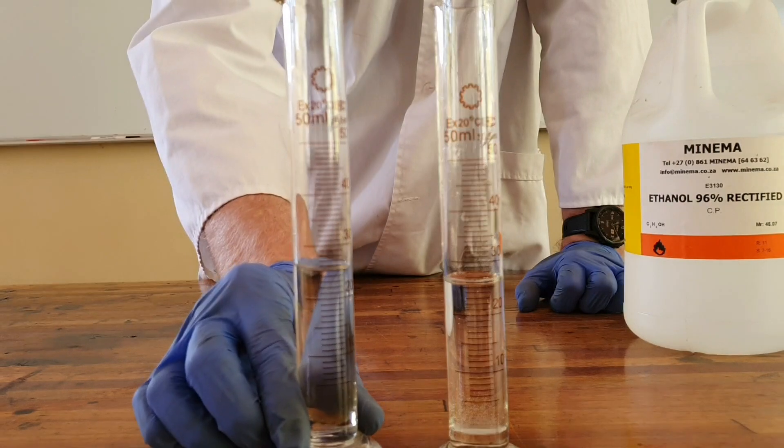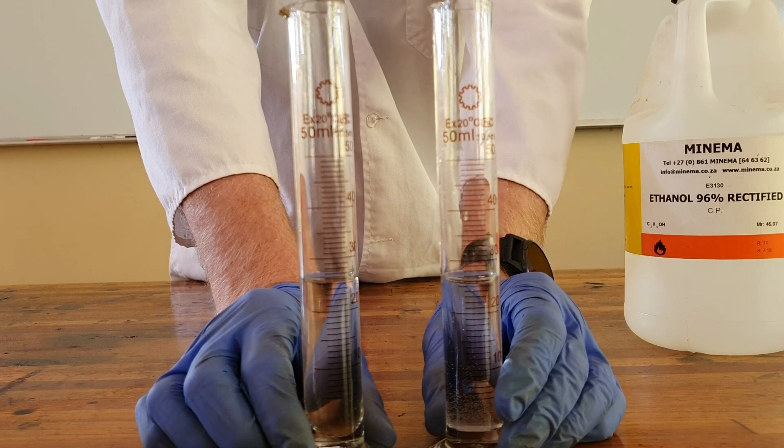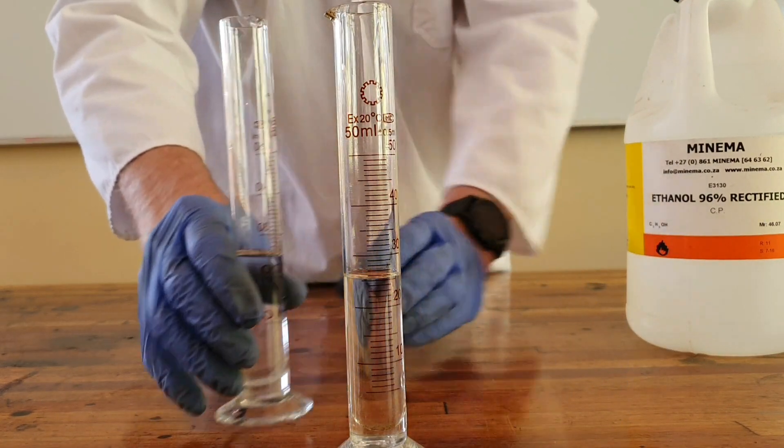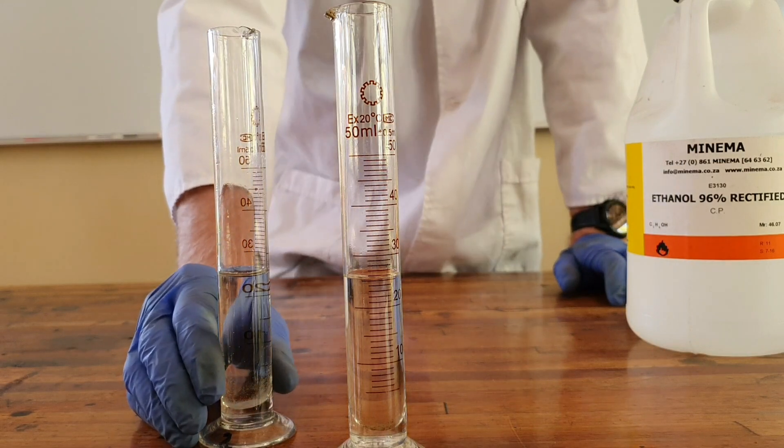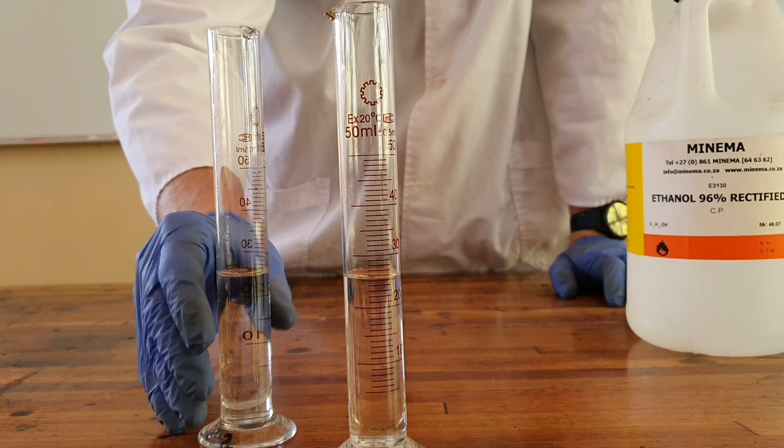The bottom of the meniscus is marked as 25 milliliters for ethanol and for water. And what I am going to do now is pour the water into the ethanol. Logic would tell us that when we add 25 milliliters to 25 milliliters we would form 50 milliliters of a substance.